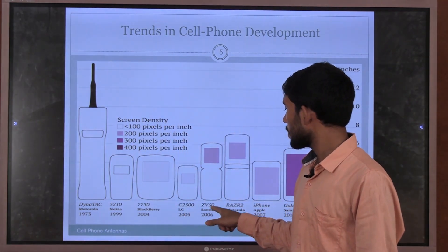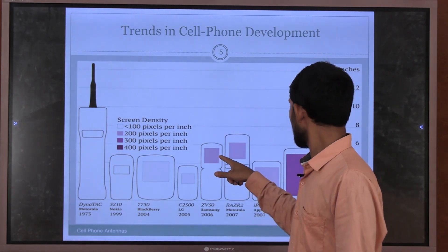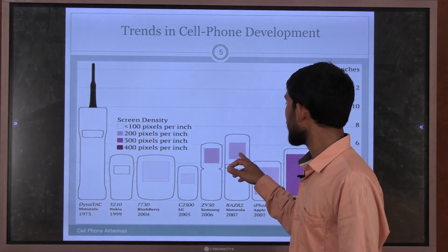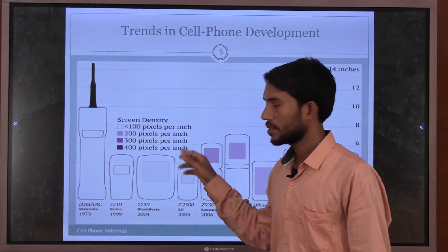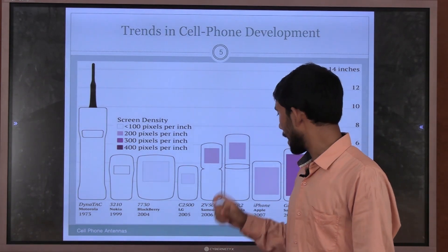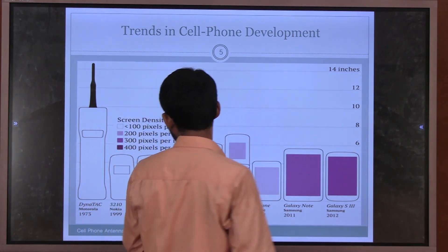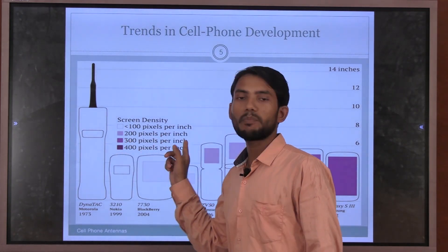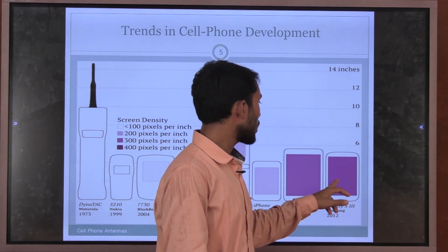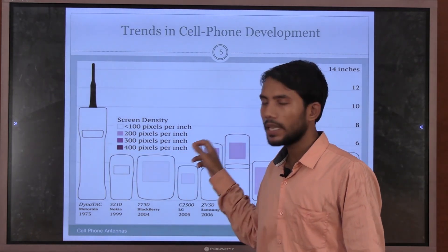After 2005-2006, Samsung invented phones at 200 pixels per inch, with a foldable smartphone near about 6 inches. In 2007, Motorola also invented a phone near 6.5 inches at 200 pixels per inch. Apple's iPhone in 2007 was a very small phone at about 4 inches. Samsung's Galaxy Note in 2011 was about 6 inches with around 300 pixels per inch, giving more image resolution. In 2012, the Samsung Galaxy S3 was about 5.5 inches at approximately 400 pixels per inch.